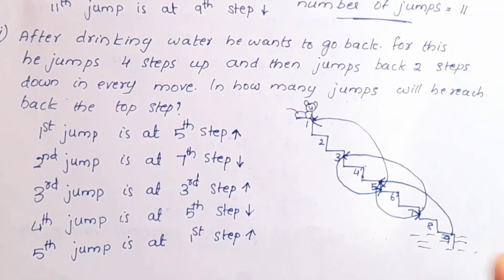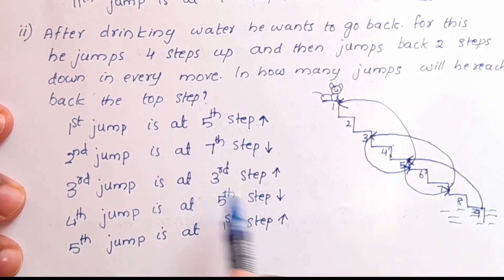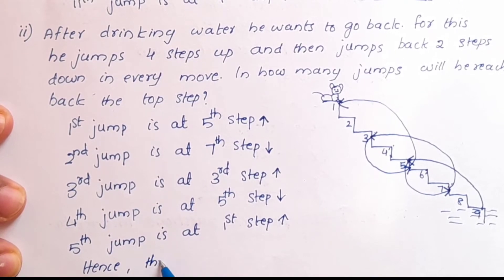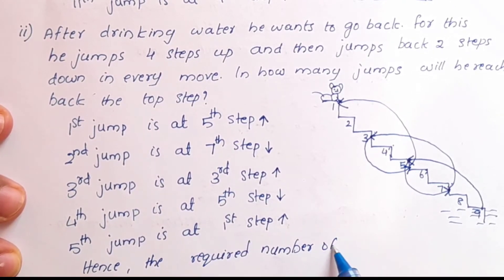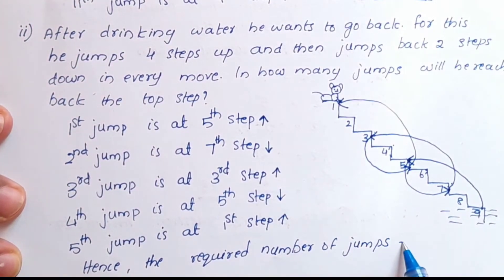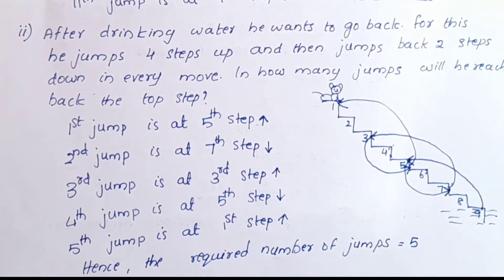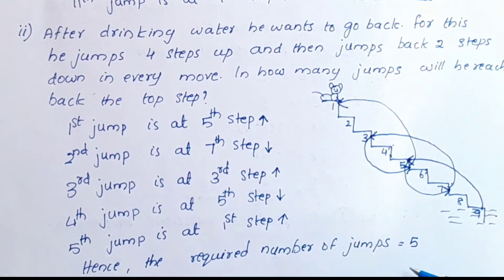The number of jumps required for the monkey to reach back the topmost step is equal to 5. Hence, the required number of jumps is equal to 5.